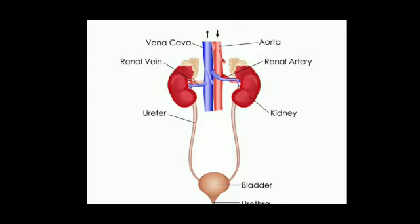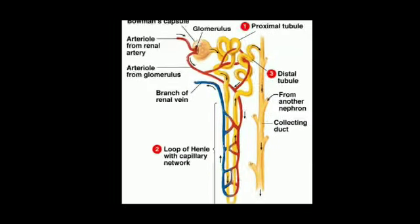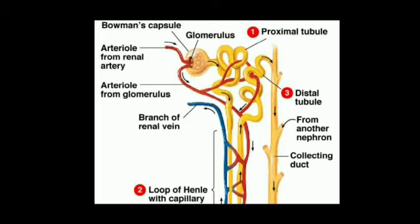The renal artery carries dirty blood containing waste, and the renal vein carries clean blood. During the process of filtration, the first part of the nephron involved is the glomerulus. In this diagram, you can see that the first part is the glomerulus, and this glomerulus consists of many filtration units.